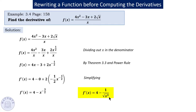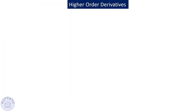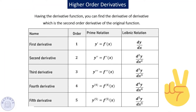Let's move to the notation of higher derivatives. For the first derivative we use the prime notation: y′, f′, or the Leibniz notation dy/dx. For the second derivative, we continue the pattern up to the third derivative. For the fourth derivative and beyond, the number is placed in brackets.